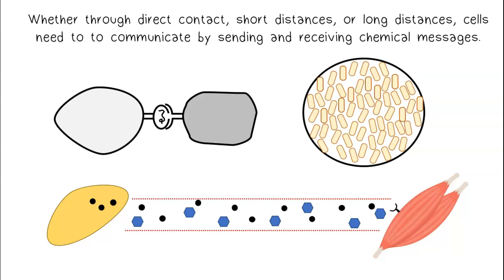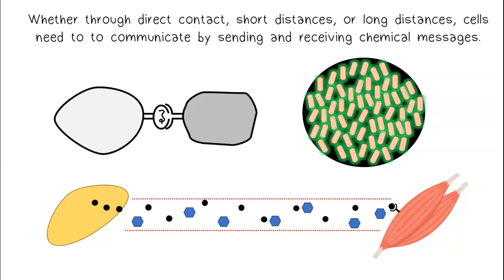Whether through direct contact, short distances, or long distances, cells need to communicate by sending and receiving chemical messages.